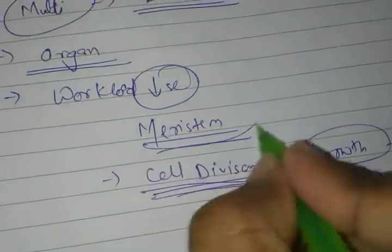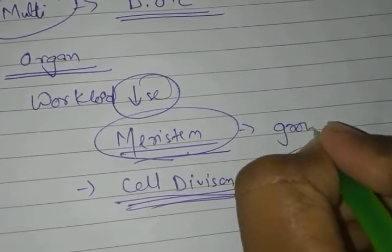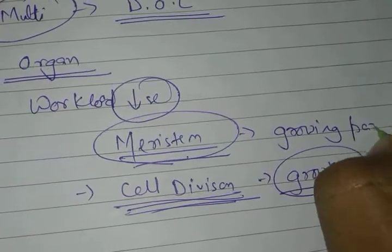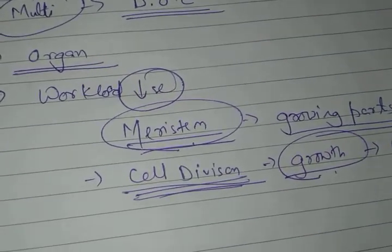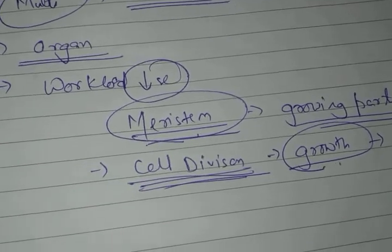These tissues are mainly found in the growing areas or growing part of plants. Meristem will be found wherever the plant needs to grow.